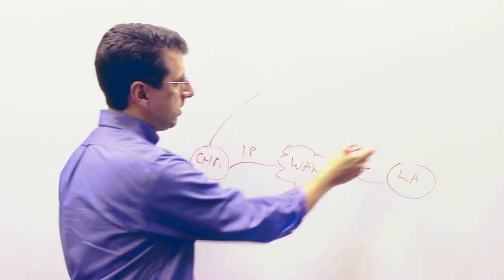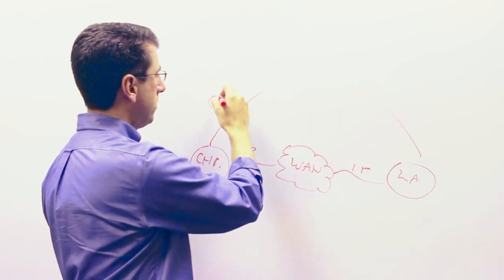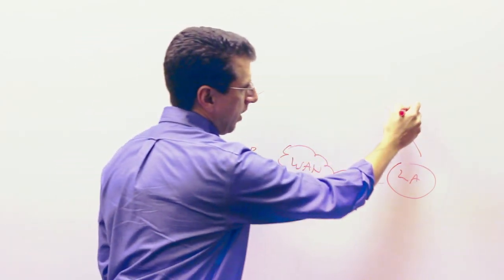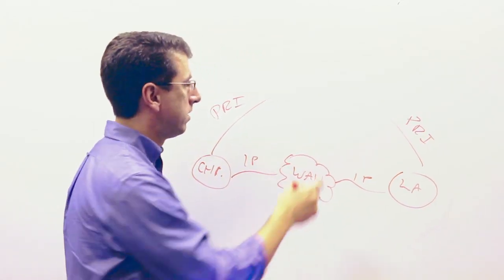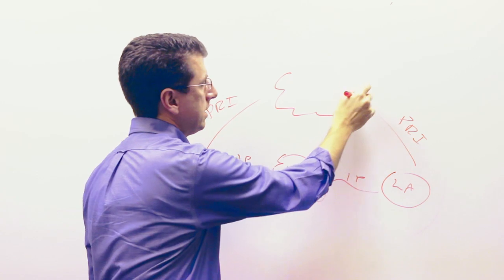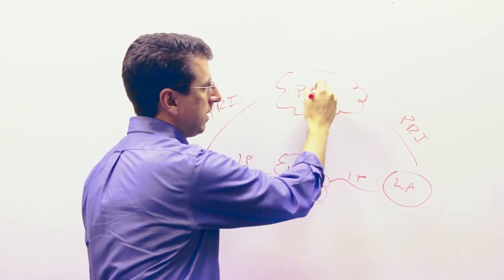Well, that gives rise to a couple things called PRIs, primary rate interfaces. And those PRIs are delivered through telecommunications companies, and those connect out to this PSTN, the public switched telephone network.